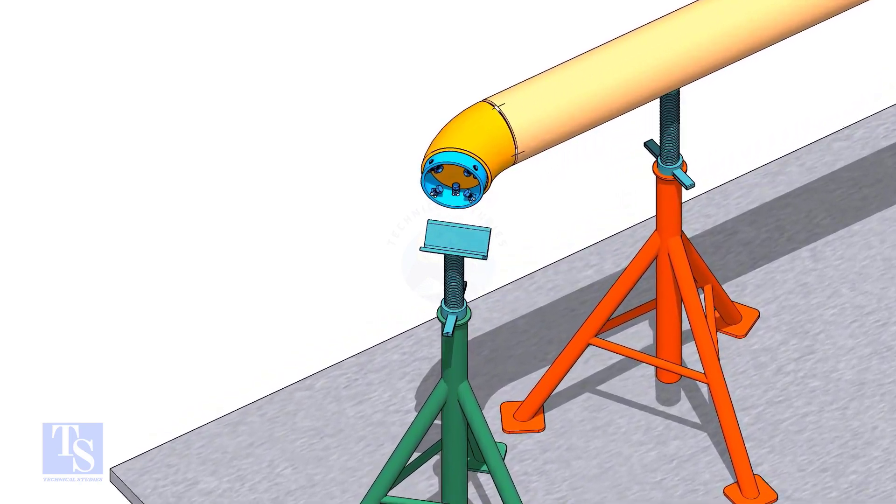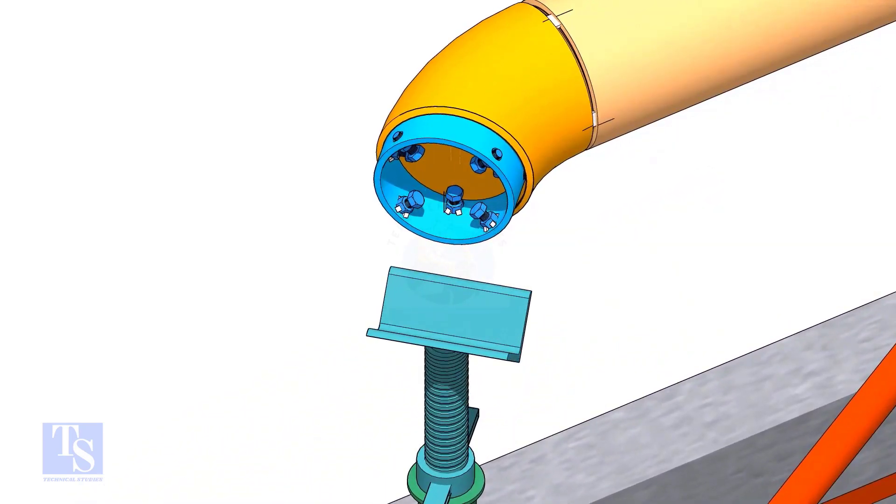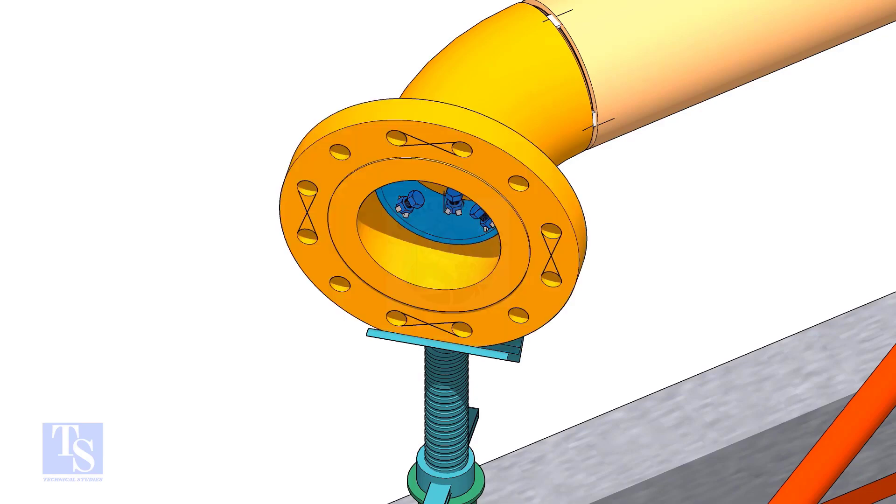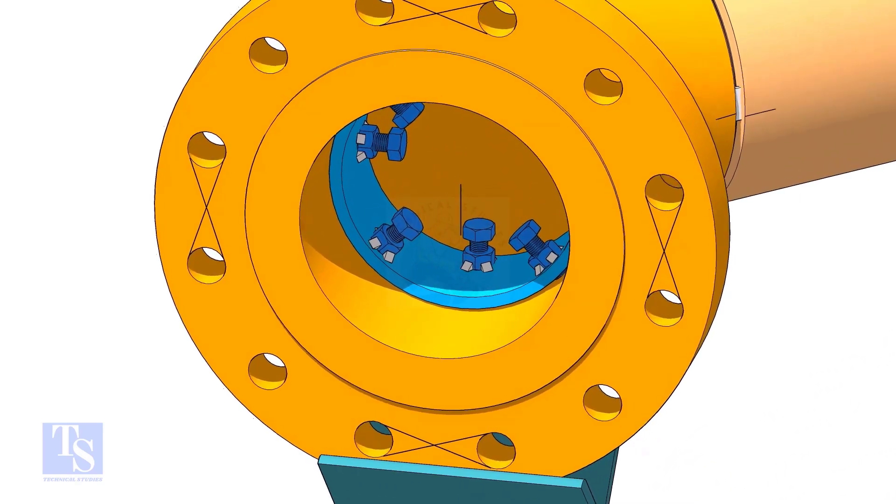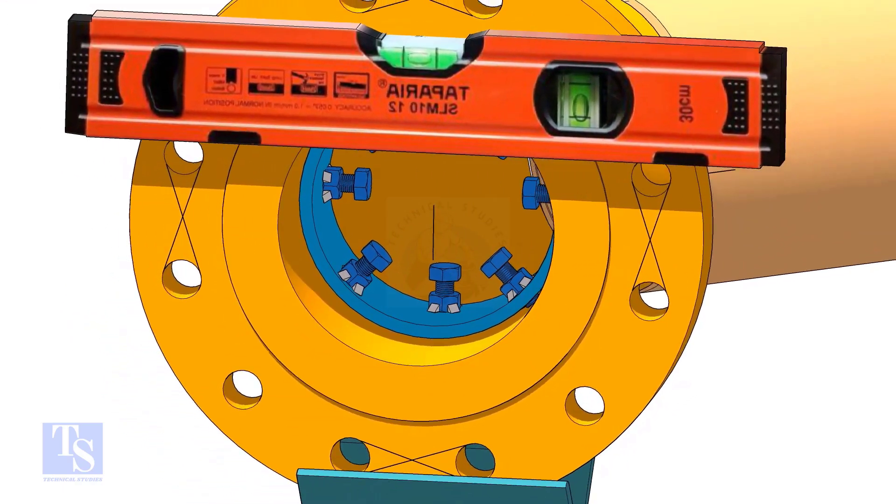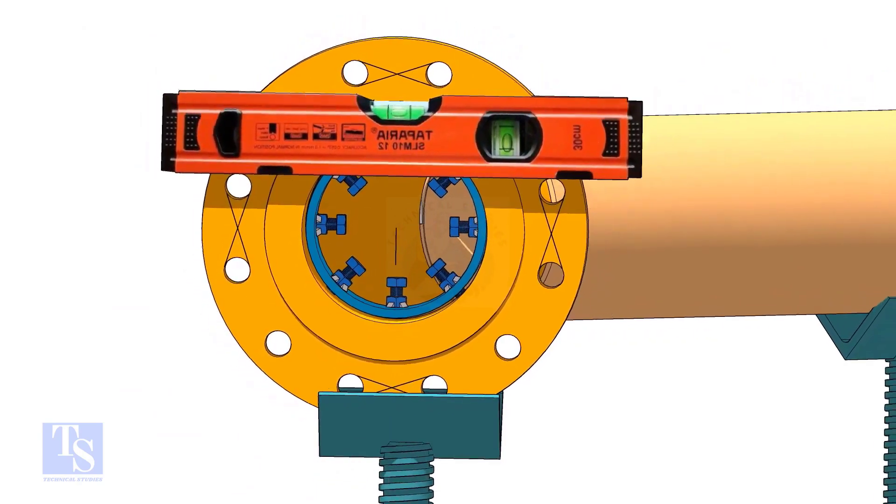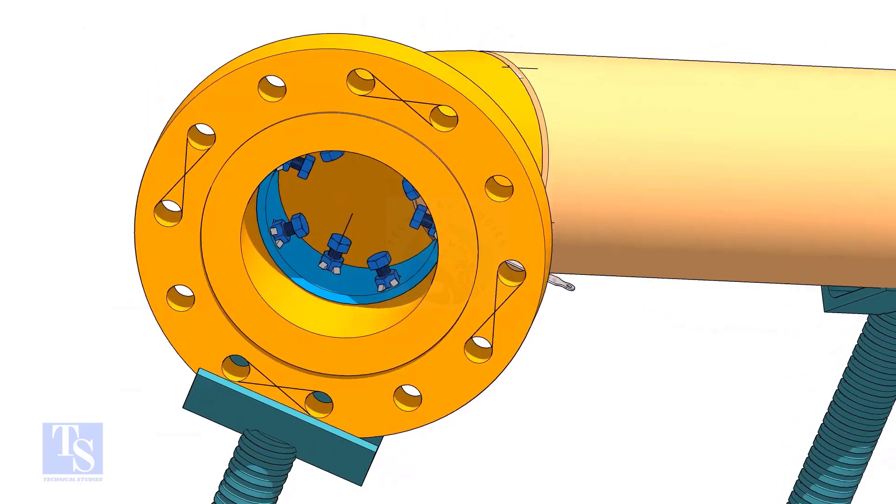Put the clamp in the elbow and tighten lightly. Put the flange in its position and maintain the level. Tighten the clamp bolts lightly. Check the gap and the overlap.